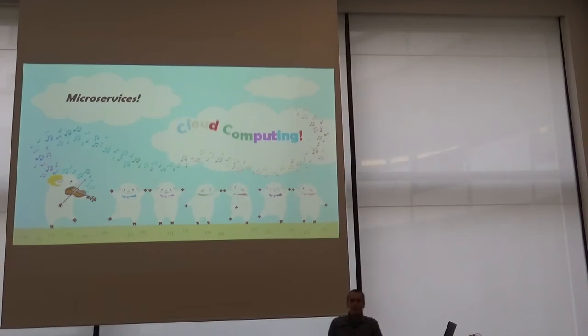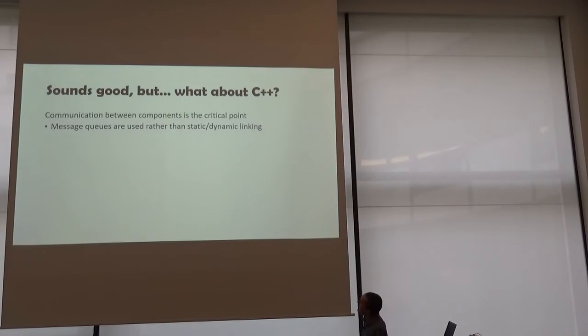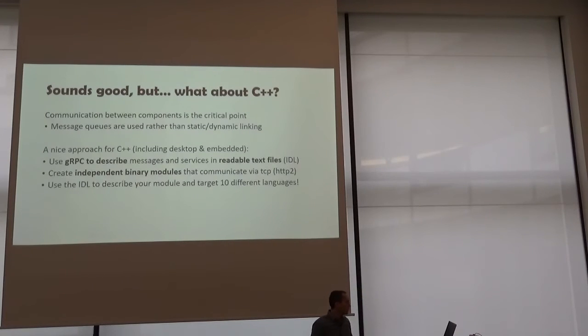But we are C++ developers and how do we do microservices in C++? We're not really in this trend. Well, we already split our software in components, but the new thing is just the communication between the components. They should be completely isolated and communicate through the network. And a good way to do this, usually we use message queues to communicate between services. You can also use gRPC.